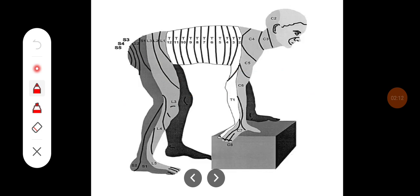All sensory modalities have to be tested in dermatomes. A dermatome is a part of the skin area supplied by a single spinal nerve. C2, C3, C4, C5, C6, and T1 supply the upper limbs, while T2 to T12 supply the chest and abdomen.